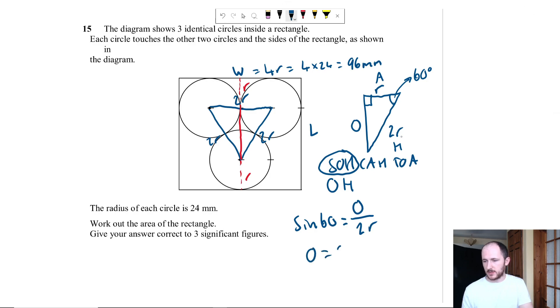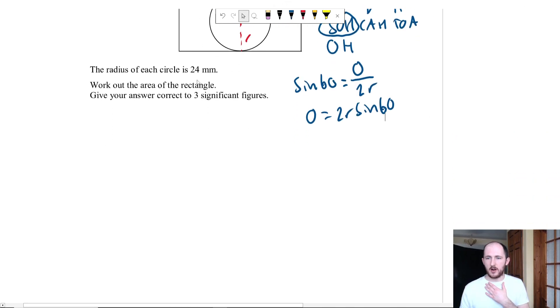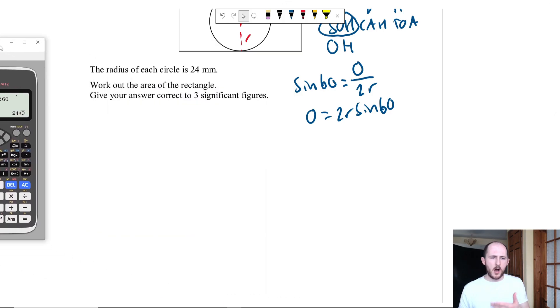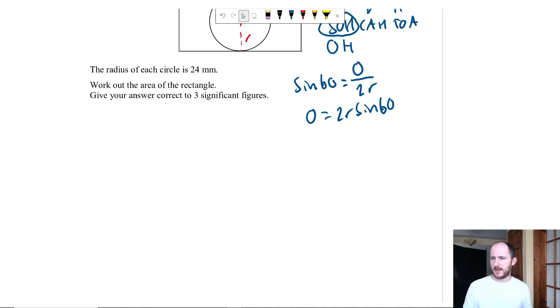Which means O is just equal to 2R sin 60 and you can use whatever method you want to get to that answer. So since I know that R is 24 I actually have all of my values so what I'm going to do now is open up my calculator and put in brackets 2 times 24 times sin 60. Which gives me 24 root 3. I'll leave it in terms of surds for now so that side there is 24 root 3.